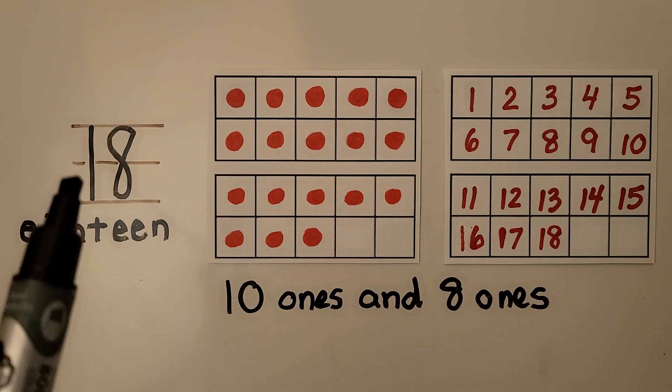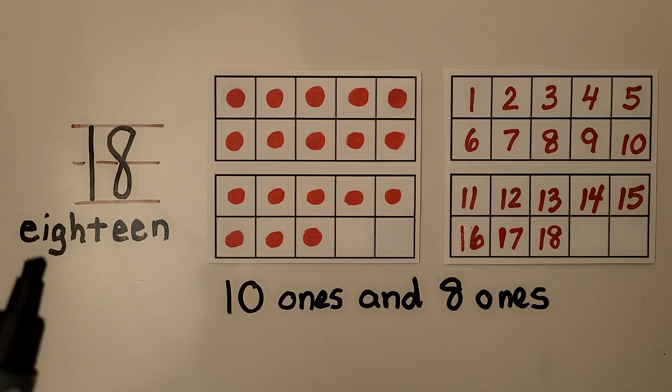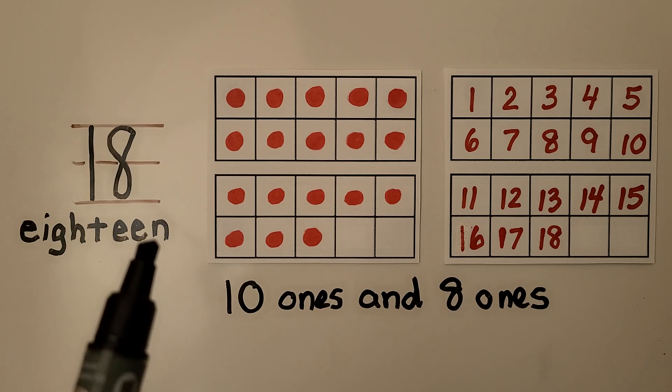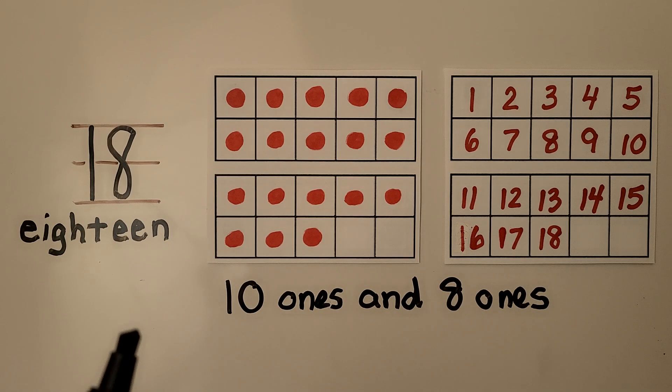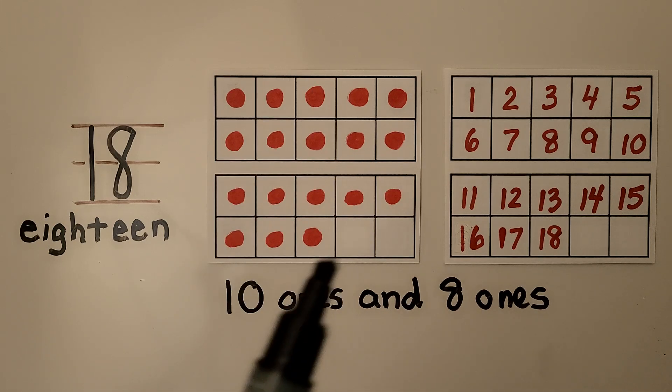Here is the number 18. It's a 1 next to an 8 together. And here is the word eighteen. We can show 18 with two 10 frames. We have 10 ones and 8 ones.